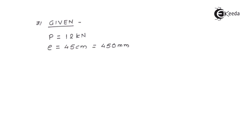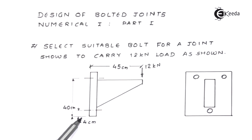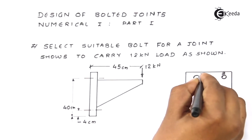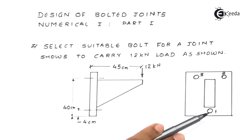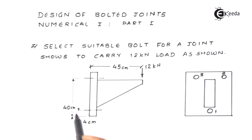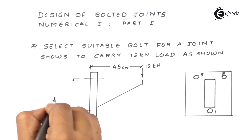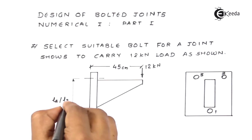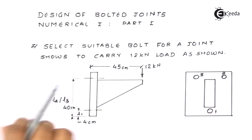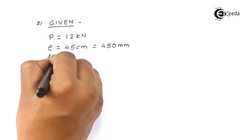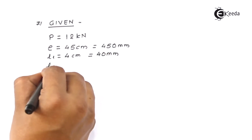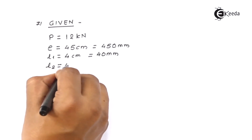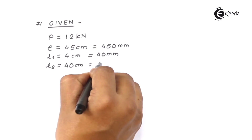The next thing is the location of bolts. From the given diagram, this is the location of bolt number 1, 2, and 3. The nomenclature is up to you, but the same nomenclature must be followed throughout the numerical. The first distance we call length 1, and the second distance we call length 2 or length 3, because both of them are the same. Length 1 comes out to be 4 centimeter, which makes it 40 millimeter. Length 2 comes out to be 40 centimeter, which becomes 400 millimeter.